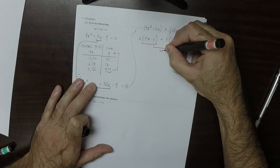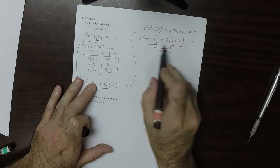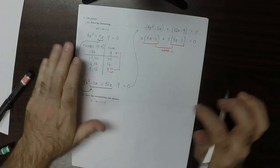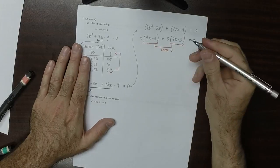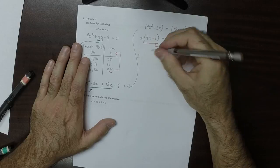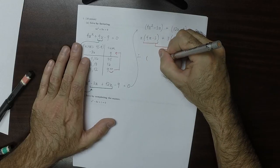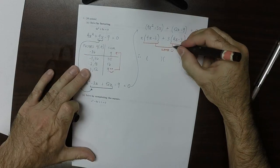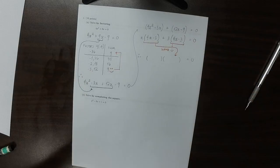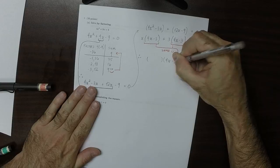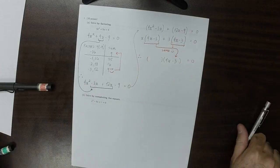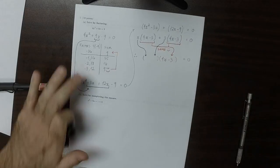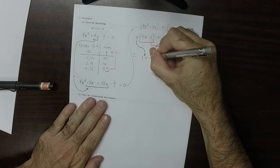So I can tell that I probably did this step correctly because the binomial 4x minus 3 is the same in both groups. If these had been different — if 4x minus 3 didn't show up in both places — that would mean I'd made an error previously. So the fact that this factor shows up twice means that we can factor out 4x minus 3, and what goes inside is x plus 3.